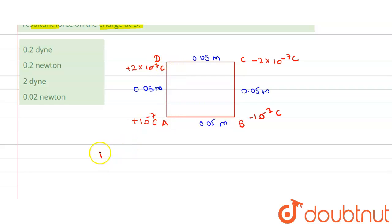So this will be F_AD, force on D due to A. This will be equal to 9×10^9, that is 1/(4πε₀) value